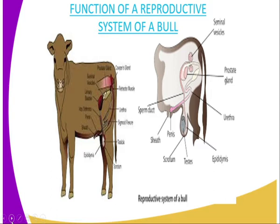Then we have the prostate gland. The two glands are very important because they normally secrete an alkaline fluid, which serves to provide nourishment to the spermatozoa and also providing a swimming medium for the sperms.